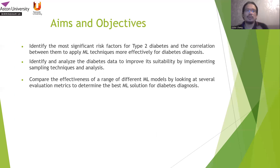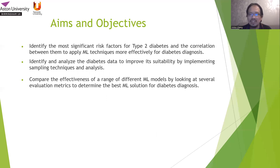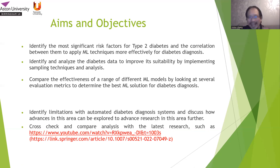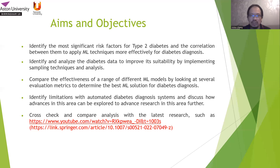The research objectives are: first, we identify the most significant risk factors for type 2 diabetes and the correlation between them, and apply suitable machine learning techniques more effectively for diabetes diagnosis. For different cases and patients, the risk factor may vary — some might be because of age, some might be because of BMI, even other diseases such as mental health. We also identify and analyze the diabetes data to improve its suitability by implementing sampling techniques, compare the effectiveness of different machine learning models using evaluation metrics, and identify limitations with automated diabetes diagnosis systems and discuss how advances can be explored.